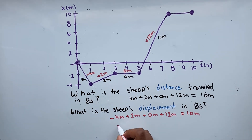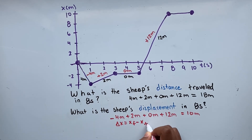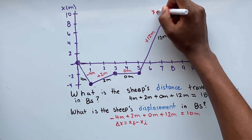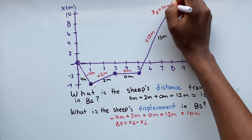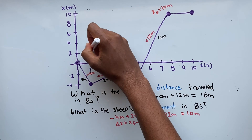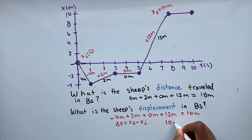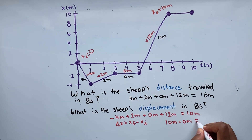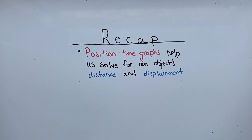We can also use the formula: delta x equals final position minus initial position. Our final position was at 10 meters and our initial position was at 0. So 10 minus 0 gives us a displacement of 10 meters. In recap, position-time graphs help us solve for an object's distance and displacement. Thank you for watching the video and hope to see you next time.